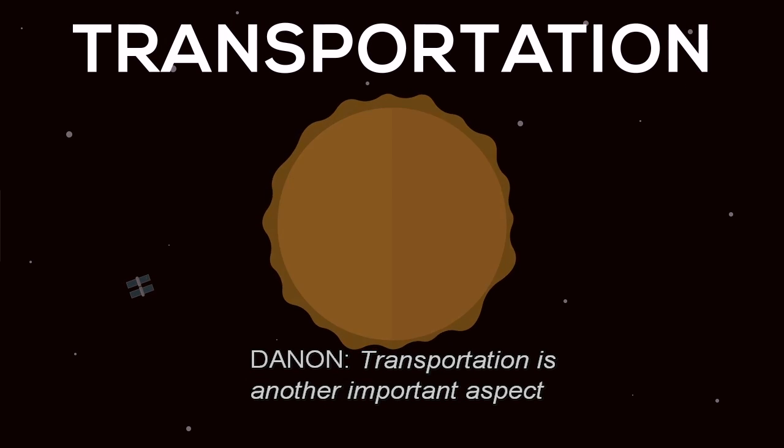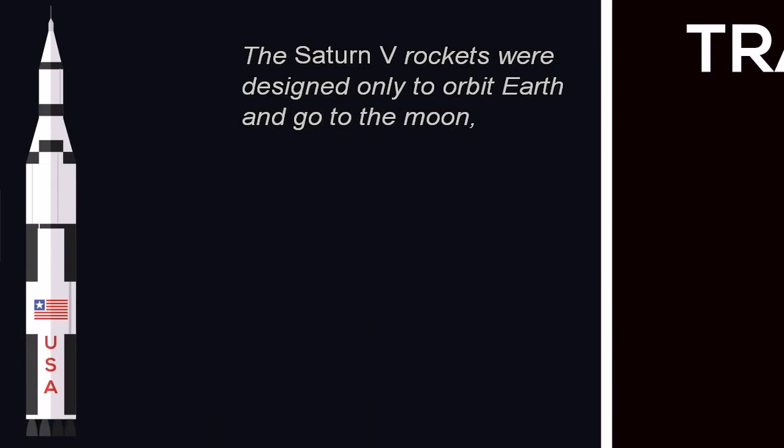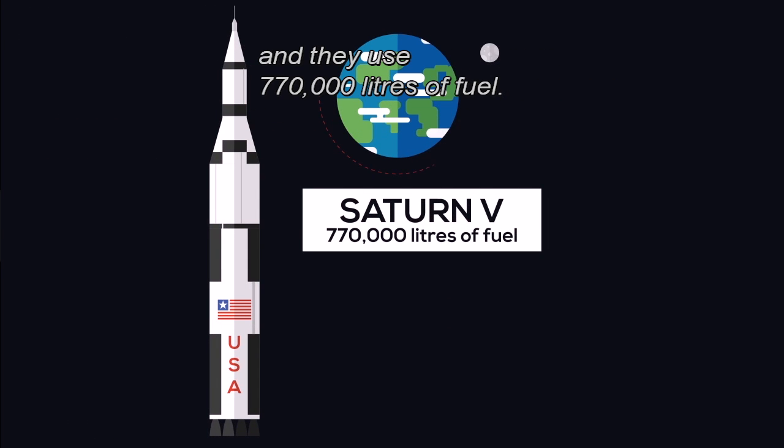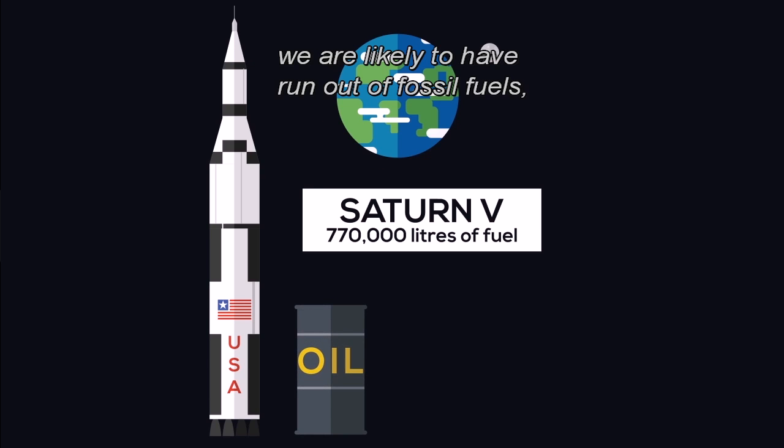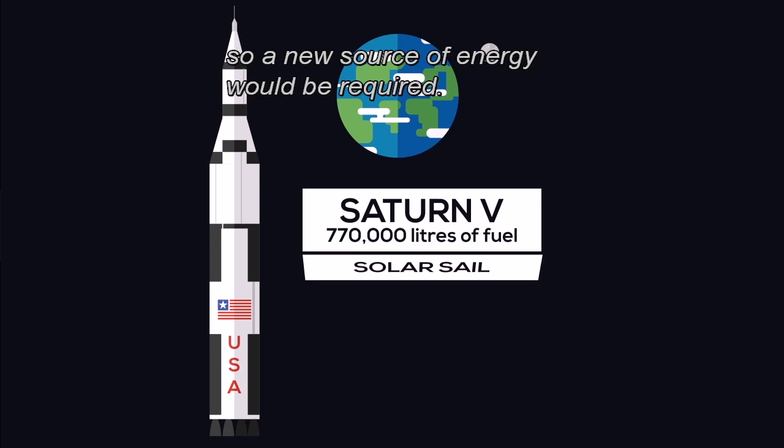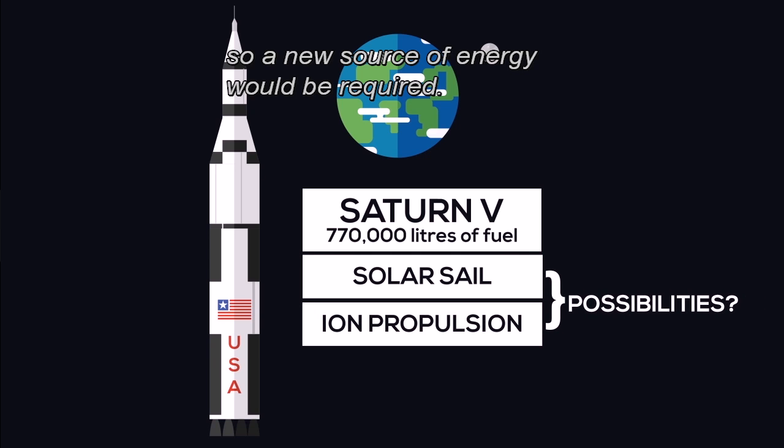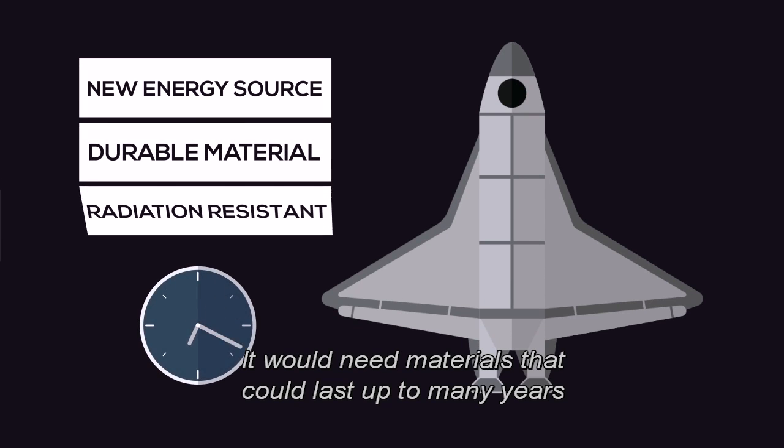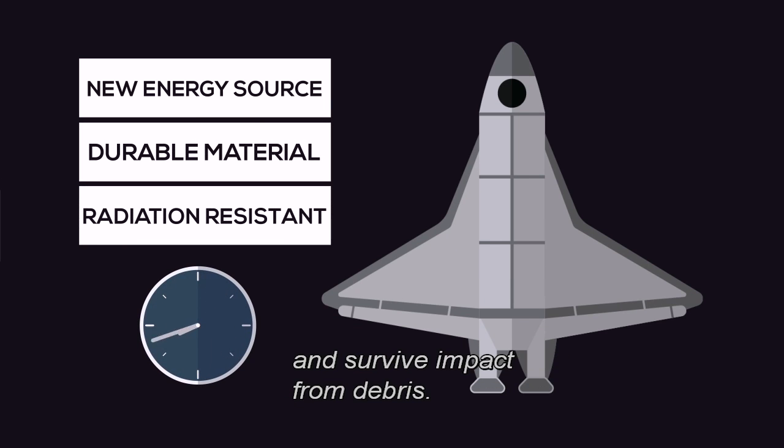Transportation is another important aspect that we would need to consider. The Saturn V rockets were designed only to orbit Earth and go to the moon, and they use 770,000 litres of fuel. By the time we plan to leave Earth, we are likely to have run out of fossil fuels, so a new source of energy would be required. Another problem we hit is the spacecraft itself. It would need materials that could last up to many years and survive impact from debris.